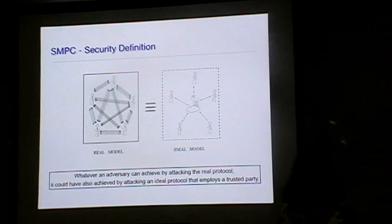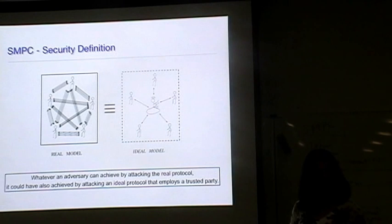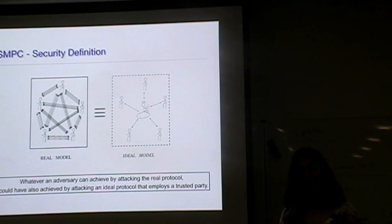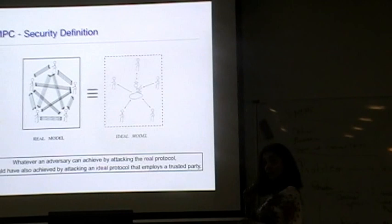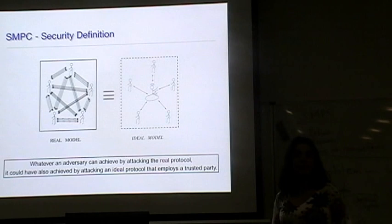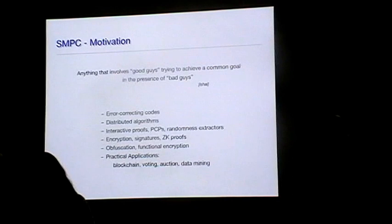There are many different flavors of security: correctness, privacy, fairness. In the most general case, adversaries can have any malicious behavior you could possibly imagine. And yes, there are bounds — that's the classic result we'll see. The adversary might try to find out secrets, corrupt the computation, or prevent others from getting the output. There are many different flavors depending on what level of security you want.